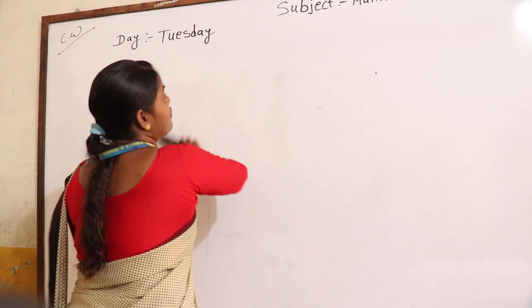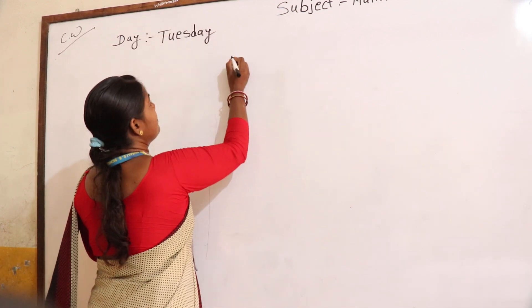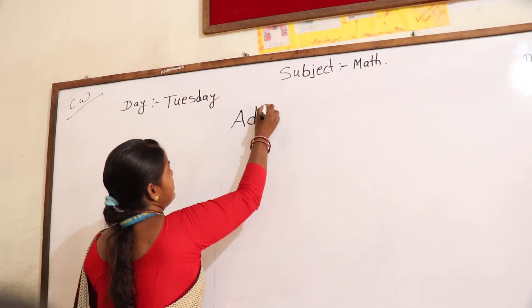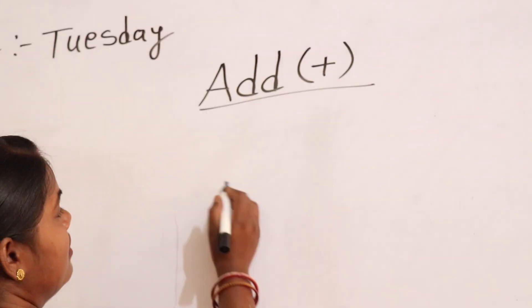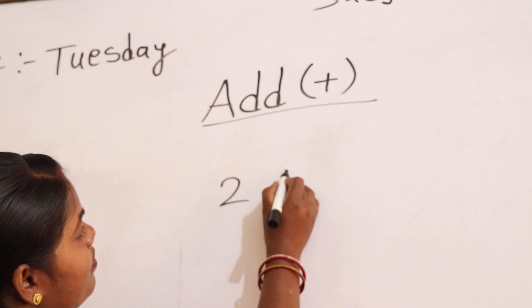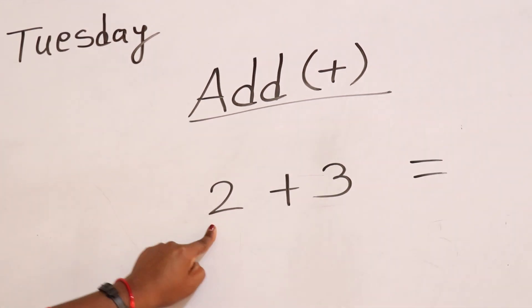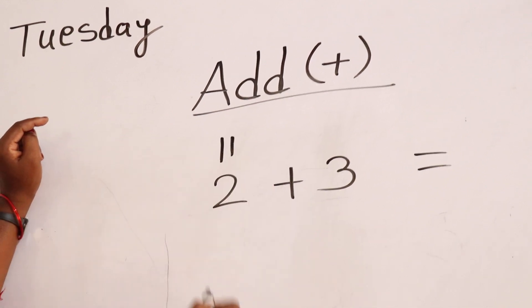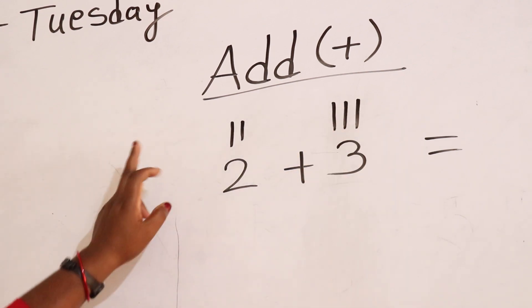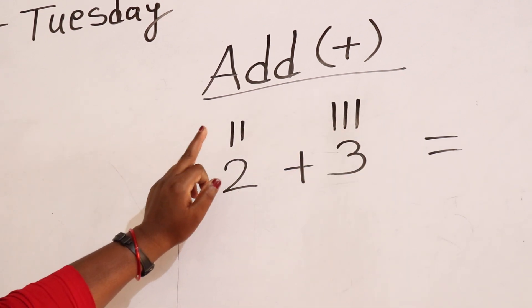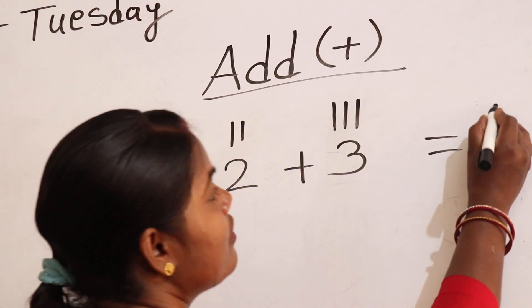Now, time starts. 1, 2, 3, 4, 5, 6, 7, 8. Draw 3 lines. Count the total lines: 1, 2, 3, 4, 5. Answer is 5.